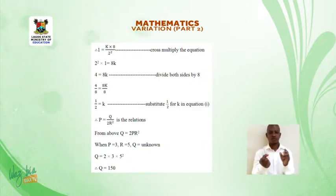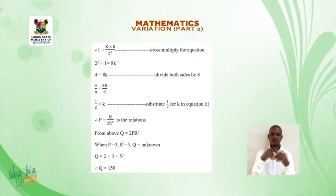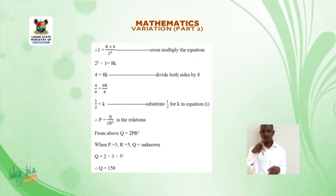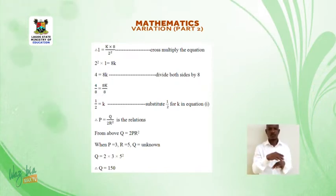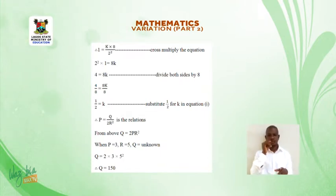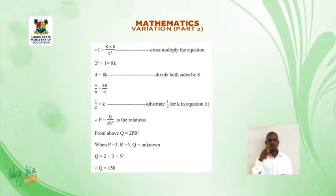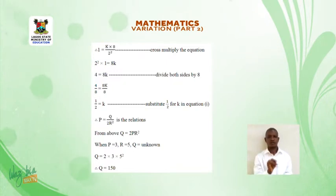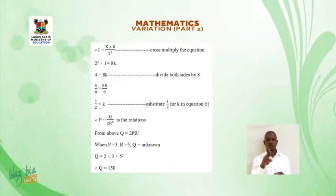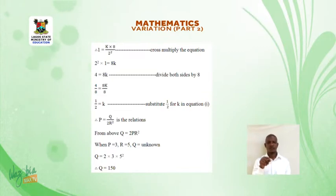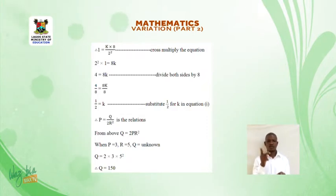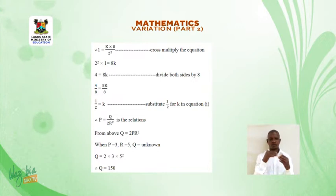Substituting 1 over 2 for K in Equation 1, the relationship becomes P is equal to Q over 2R squared, which gives Q is equal to 2PR squared. When P is equal to 3 and R is equal to 5: Q is equal to 2 times 3 times 5 squared. Therefore, Q is equal to 150.